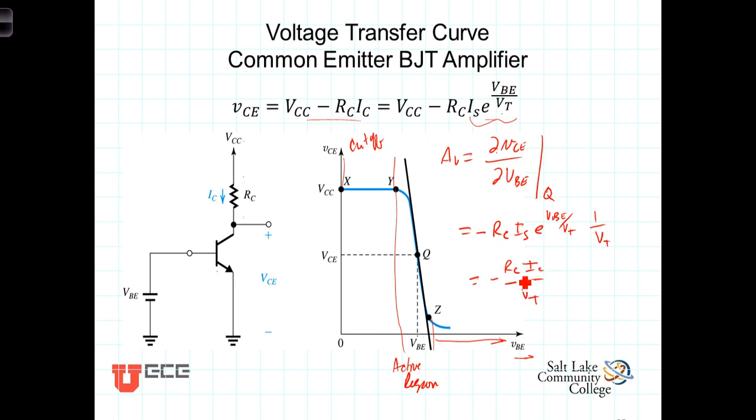It's also proportional to the resistor that exists or is placed in the collector, just as with the MOSFETs. The gain of the common source amplifier was dependent upon the drain resistor, while the gain of the common emitter amplifier is dependent upon the collector, or the size of the collector resistor.